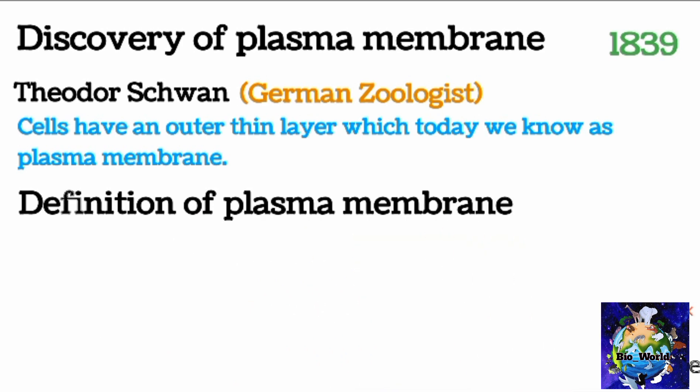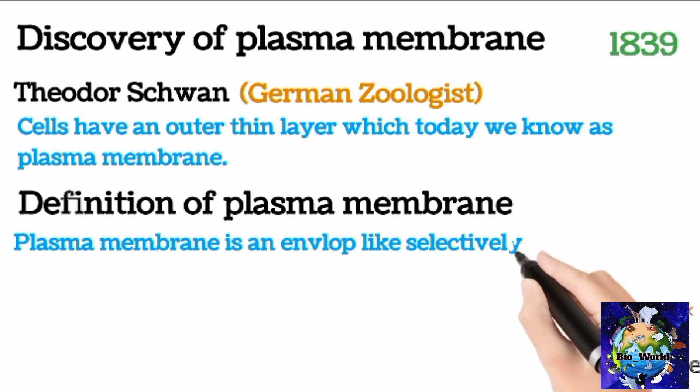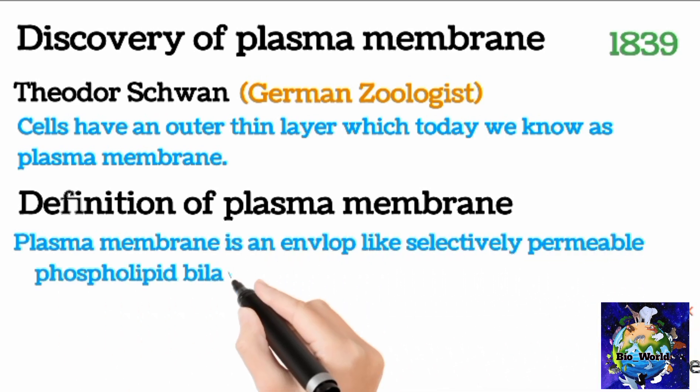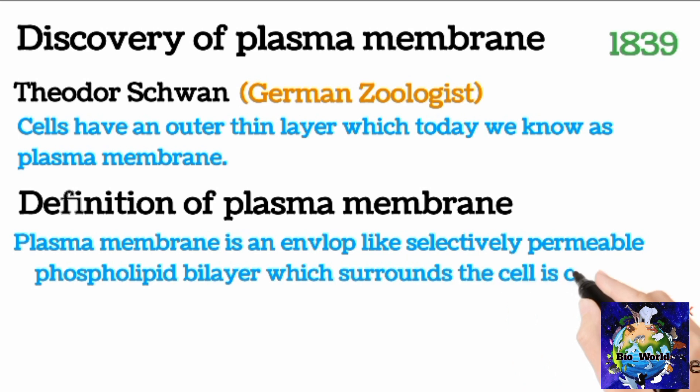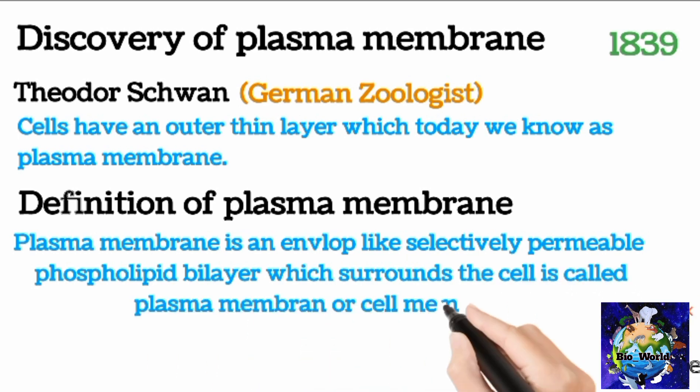Definition of plasma membrane. Plasma membrane is defined as an envelope-like selectively permeable phospholipid bilayer which surrounds the cell and cellular organelles, is called plasma membrane or cell membrane.